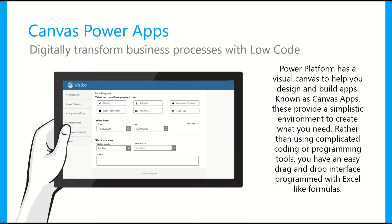The first app type included with Plan 1 is canvas PowerApps. These are perfect for digitally transforming your business processes using a low-code platform. People who don't necessarily have a programming background will be able to build these applications really simply. They have an easy drag-and-drop interface, and Microsoft promotes the idea of citizen developers — people without programming backgrounds but with a strong Excel background. These canvas PowerApps are built with the exact same formulas used inside Excel, so people from a finance background tend to pick them up very quickly.